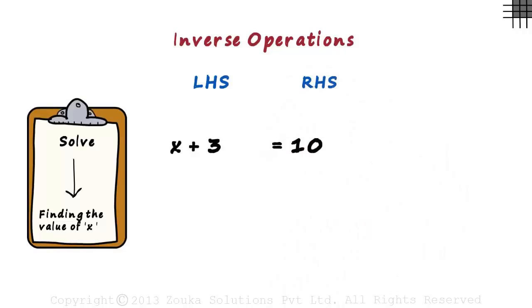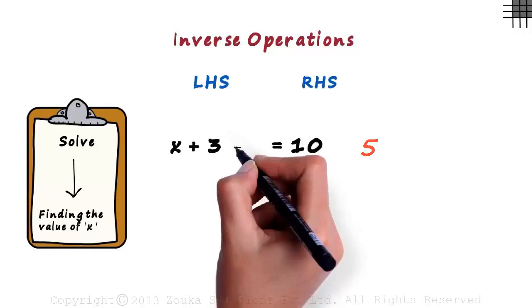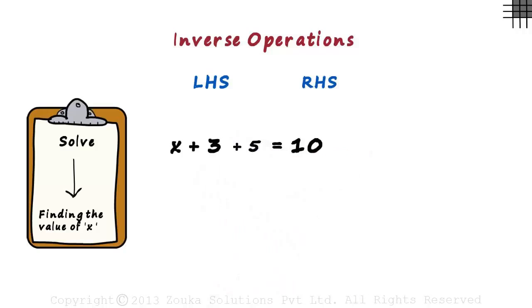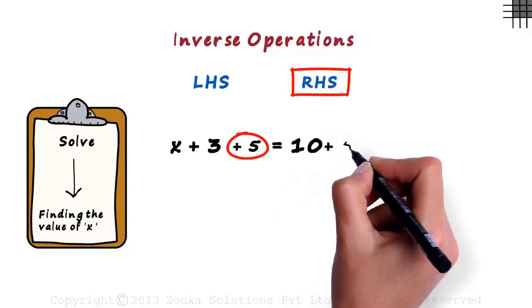Let us choose a random number, say 5. Assume we add this number to the left-hand side. For the equation to hold true, we have to add the same number to the right-hand side.